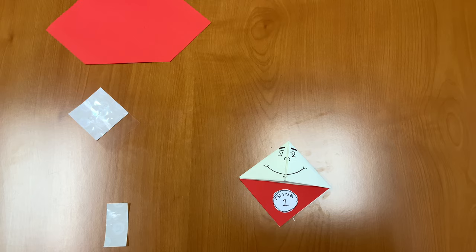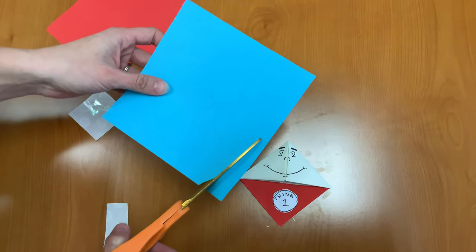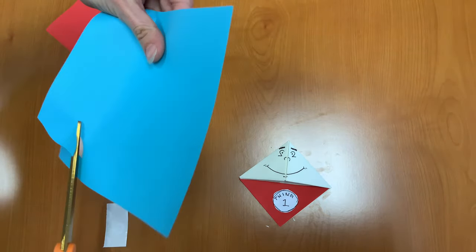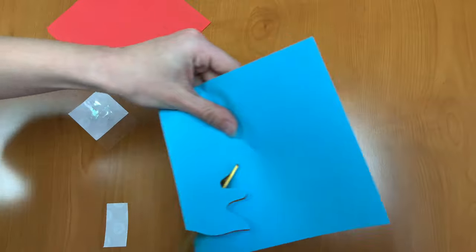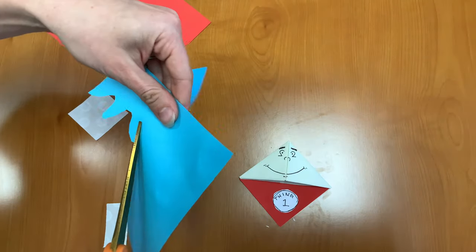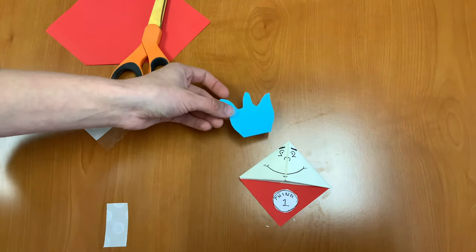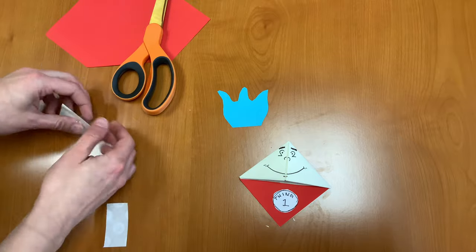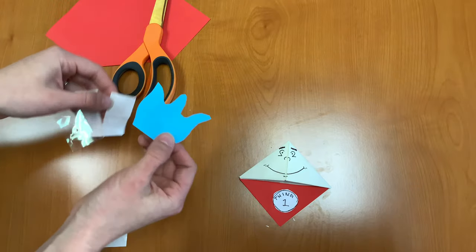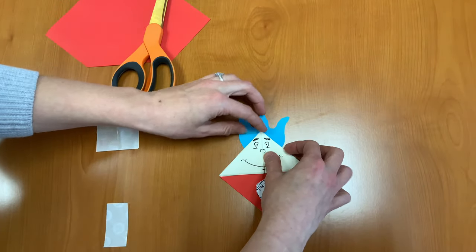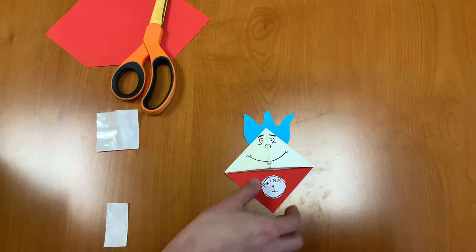And our last step is to take our blue piece of paper, and I'm just going to cut some squiggly lines for some crazy hair. So I have my crazy hair cut out, and I'm going to take another glue dot, and we're going to attach our crazy hair to our Thing from Dr. Seuss. And then we have our Dr. Seuss bookmarks.